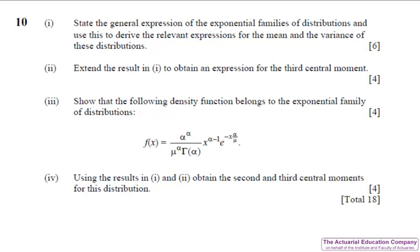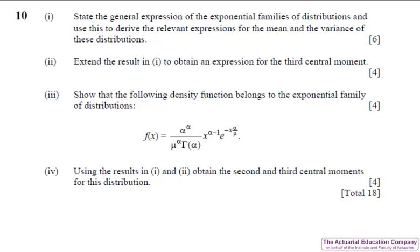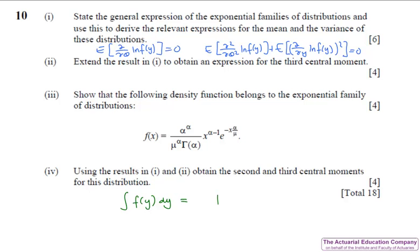Our final question on the paper tests the exponential family from chapter 10 of the notes. Part one gives us yet more marks for regurgitating a proof this time on the mean and variance of the exponential family. This proof has only been tested once before which is April 2011 question eight. These are proved in the notes but will require students to remember the two results that were given which might have been a little bit harder. Alternatively you could start with the fact that the integral over the full range is equal to one and then differentiate both sides with respect to theta and that will give you the mean result and then differentiate it a second time with respect to theta and rearranging will give you the variance result.